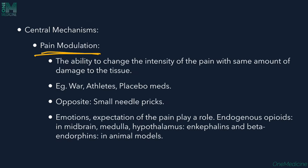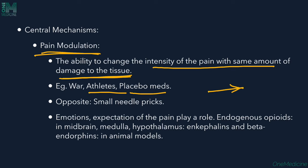Another central mechanism is pain modulation — a complex mechanism that humans and only certain complex animals possess. This allows changing the intensity of pain with the same amount of tissue damage. Athletes who fall during a game don't stop — they get right back up. This is a central mechanism of pain modulation where, without any reduction in the stimulus, there is a reduction in perceived pain intensity.